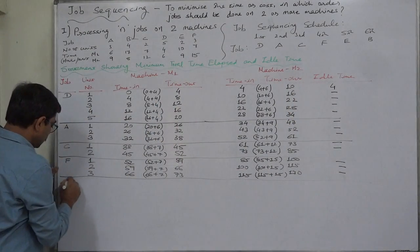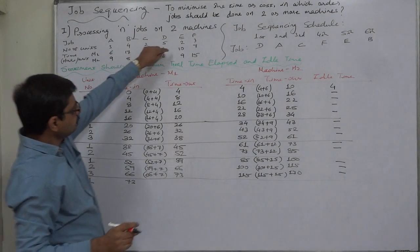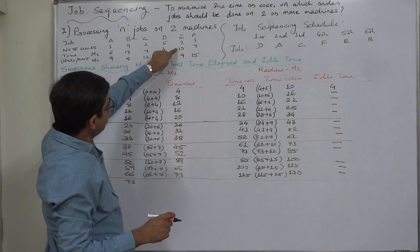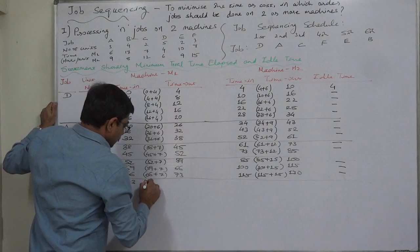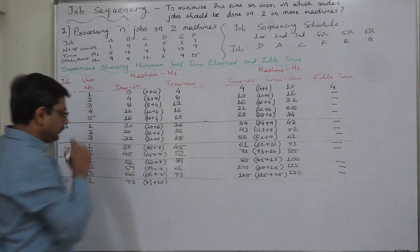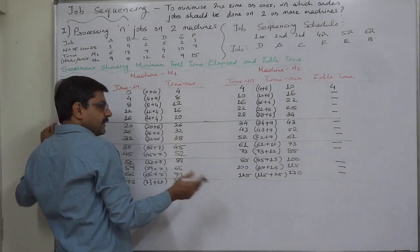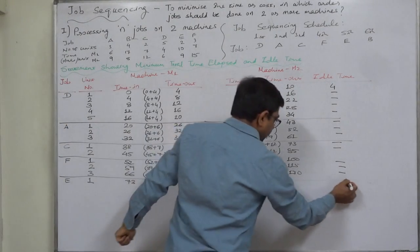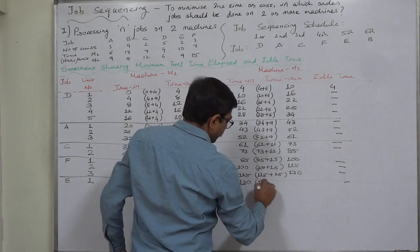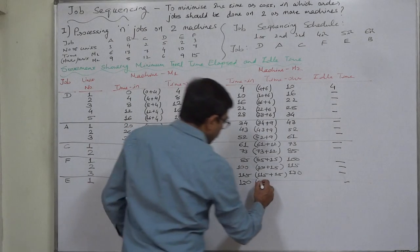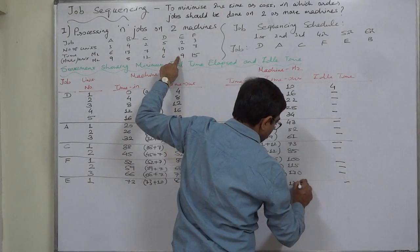Now it is the turn of job E with 2 units. First unit of E: time in on machine 1 is 73. Processing time required per unit on machine 1 is 10 hours, so 73 plus 10 equals 83. The unit is waiting, not the machine, so no idle time. 83 or 130, whichever is later: 130 becomes time in, 130 plus 9 equals 139 for time out.